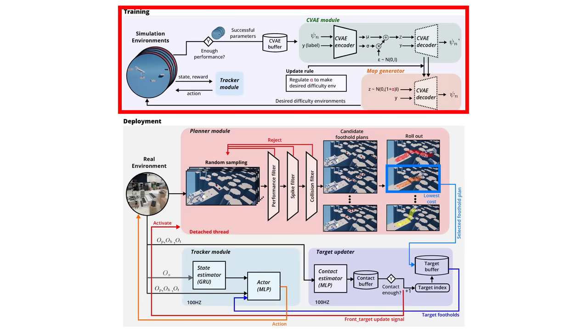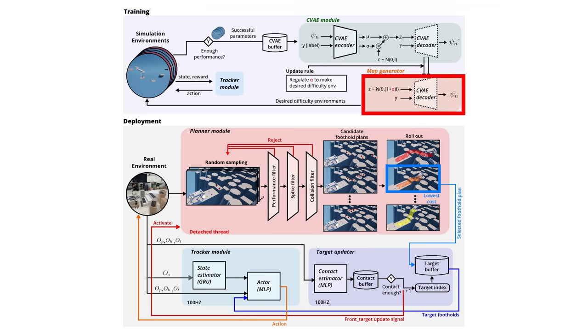We first trained the tracker module to achieve high performance during the training stage. The tracker module was trained using reinforcement learning on the Razum simulator. We employed a generative model called map generator, which evolves adversarially with the tracker module to provide desired difficulty environments.